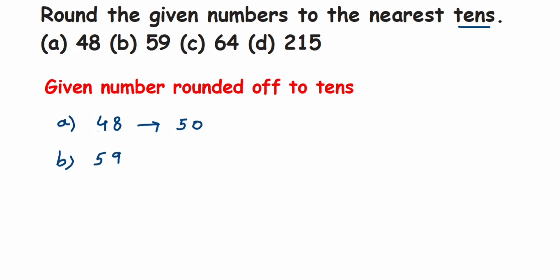Second question: 59. Again, they're asking us to round off to nearest tens, so I check the number in the ones place — we have 9. Since 9 is greater than 5, and the rule is it should be equal to 5 or greater than 5, I have to add 1 to the tens digit. So 5 plus 1 becomes 6, and the remaining number — the 9 — becomes 0. So 59 rounds to 60.